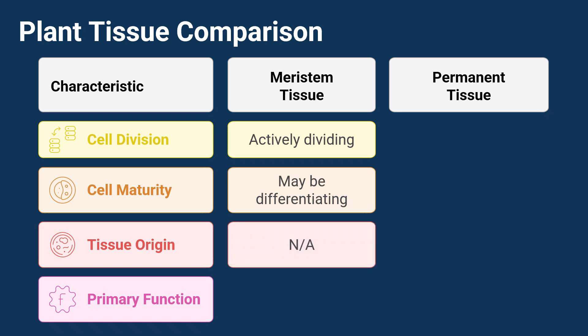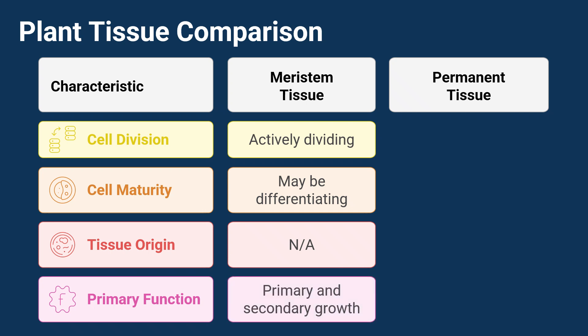Tissue origin. Meristematic tissue is basically the original tissue — it's where all the other tissues come from, not the other way around. Primary function. Their main job is primary and secondary growth. Primary growth helps roots and stems get longer, and secondary growth makes the plant trunk or stem thicker. It's all about getting bigger.